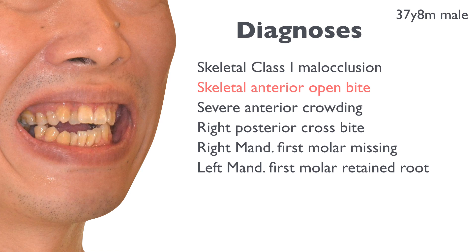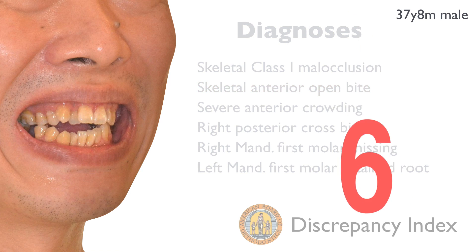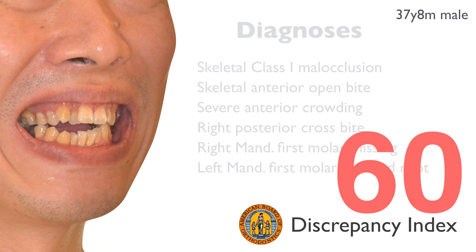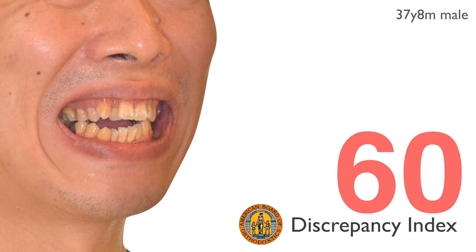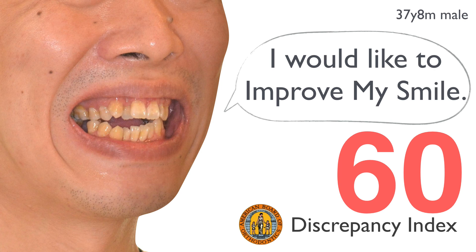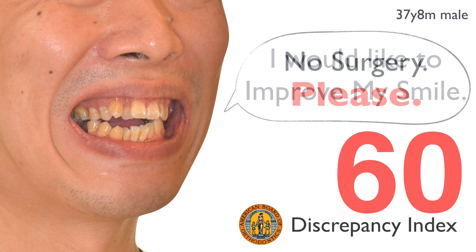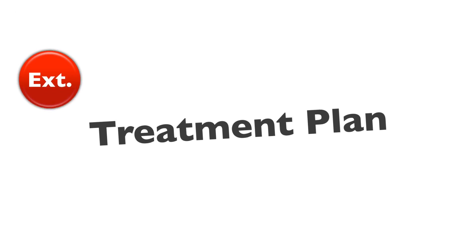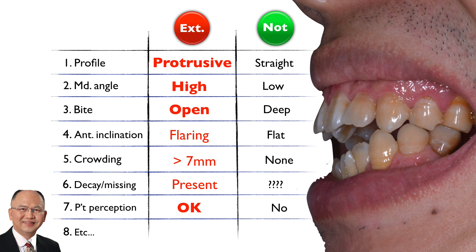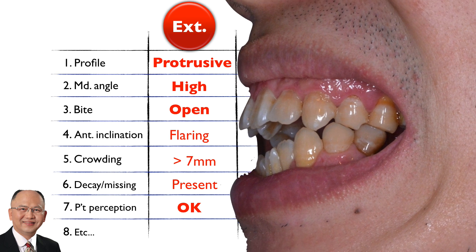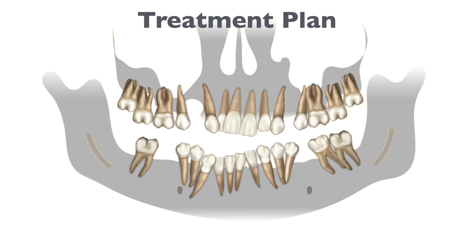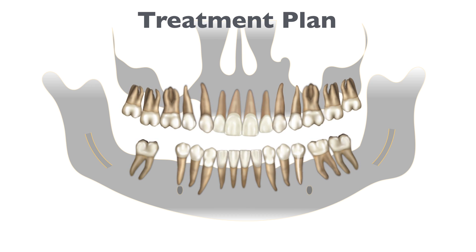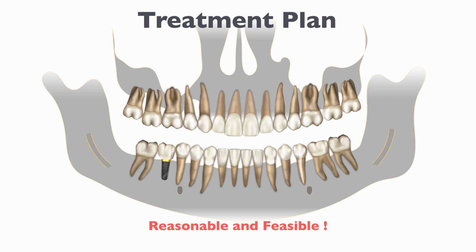The diagnosis of this patient was established and the discrepancy index was 60 points — apparently not a simple case. However, the simple request of this patient was to improve his smile without surgery. According to Dr. Christian's decision-making table, all the characteristics of this patient agreed to the extraction plan. Extraction would be more beneficial for him. As a result, we decided to extract his upper first premolars and the resorbed root.